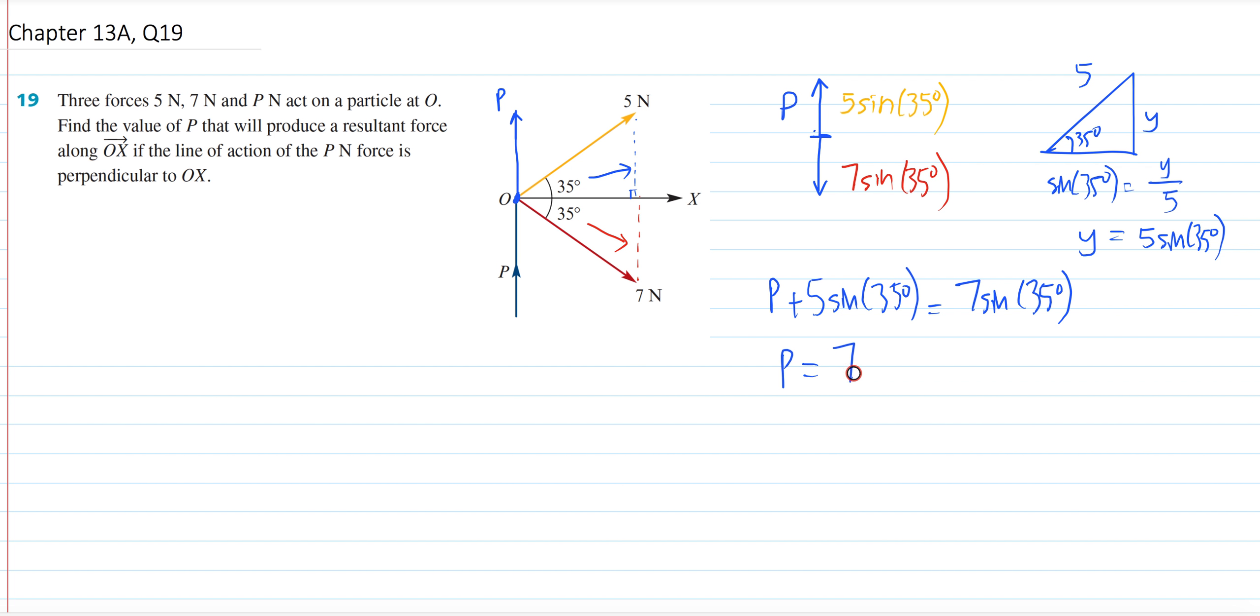So you're going to solve for P, it's just 7 sine 35 degrees minus 5 sine 35 degrees. Quick and simple. Chug inside your calculator, your fun answer should be...